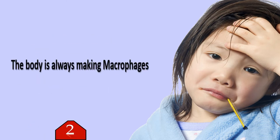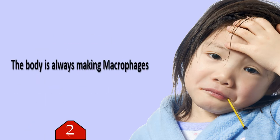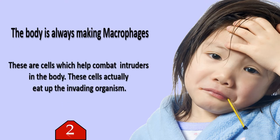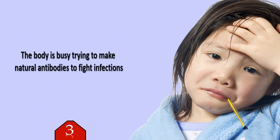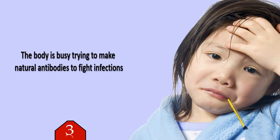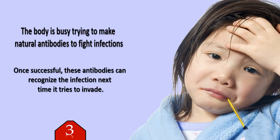2. The body is always making macrophages. These are cells which help combat intruders in the body — these cells actually eat up the invading organism. 3. The body is busy trying to make natural antibodies to fight infections. Once successful, these antibodies can recognize the infection the next time it tries to invade.